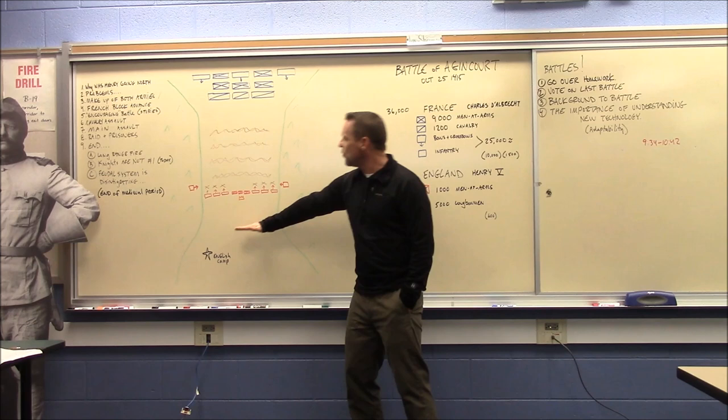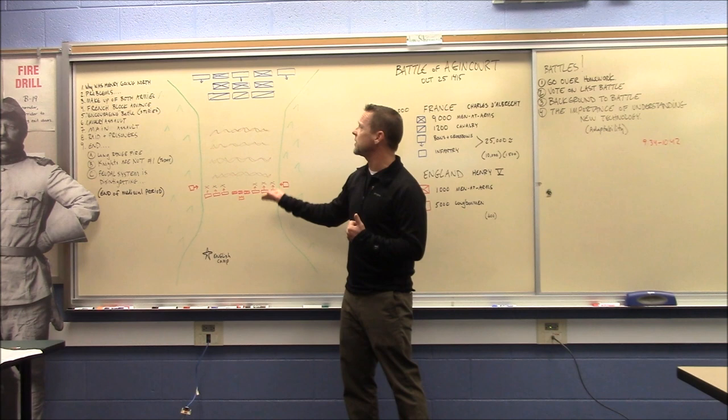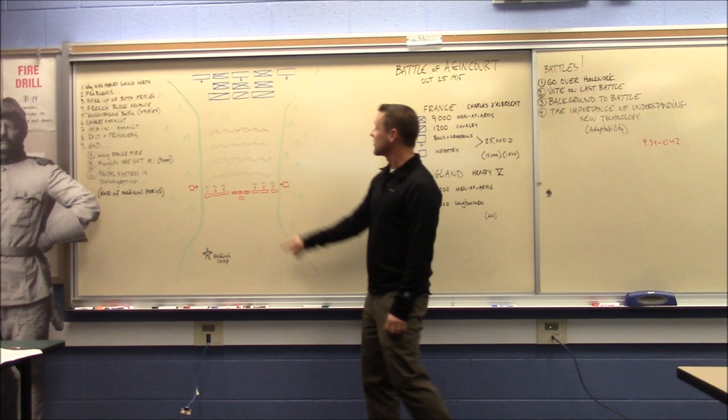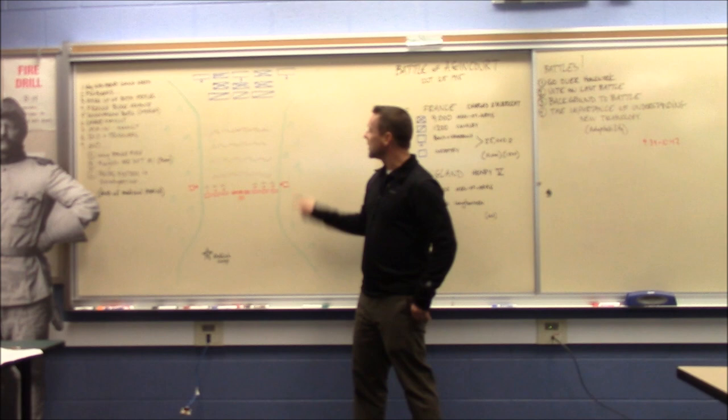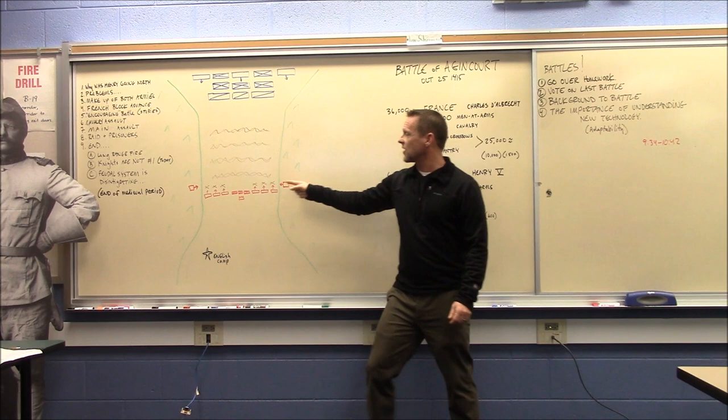What happens is Henry V is going to move his troops forward to get them just within effective bow range. We've already talked about what effective bow range is. The farthest anyone has ever shot a traditional longbow is 635 meters. Henry moves his troops up to effective bow range. What he does, and this is a smart thing, he puts a couple of his archers in the woods hiding on the wings.